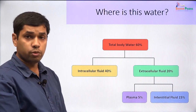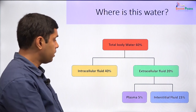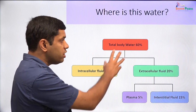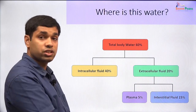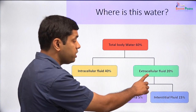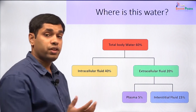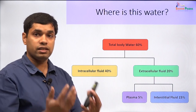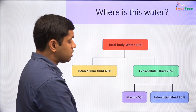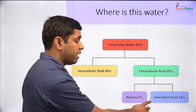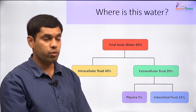Let us look at the proportions. Total body water is 60% of body weight. The intracellular fluid is two-thirds of this, so 40% of body weight is intracellular fluid and 20% of body weight is extracellular fluid — there is more fluid within the cells than outside. Of the extracellular fluid, plasma is 5% of body weight and interstitial fluid is about 15% of body weight.